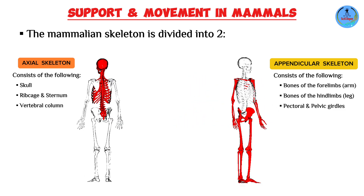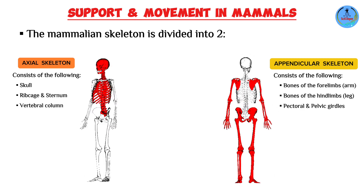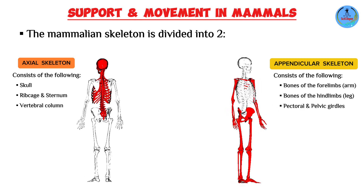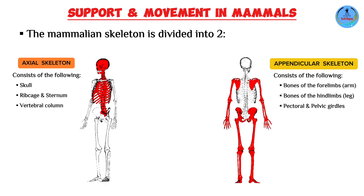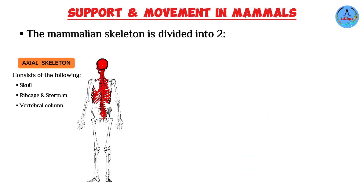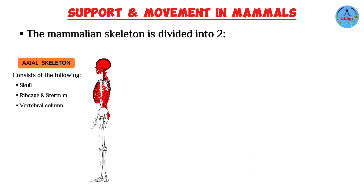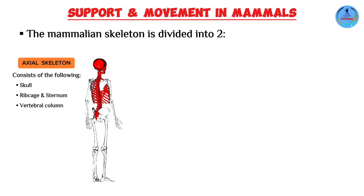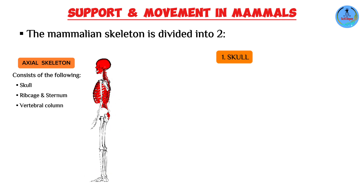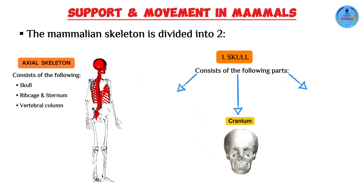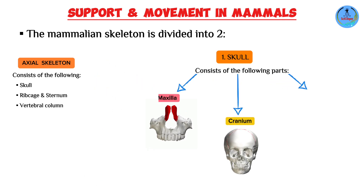I'm going to discuss the structure of each of these bones and how they are adapted to perform their function. Let us start with the axial skeleton, which consists of the skull, the sternum, the rib cage, and the vertebral column. Let us begin with the skull.